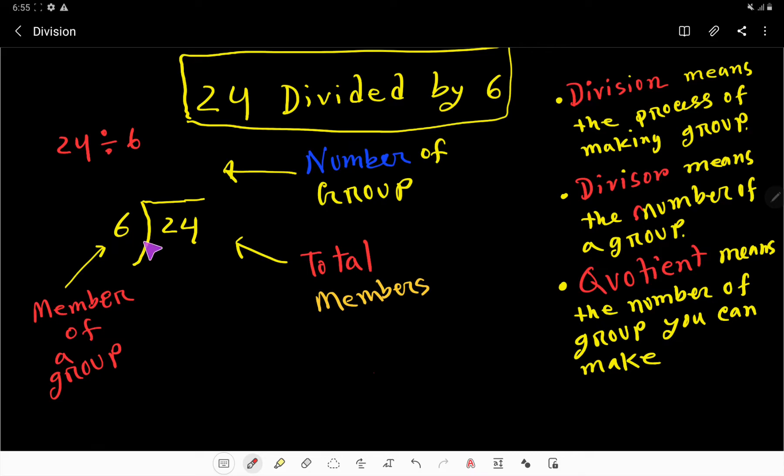And dividend means the total members. So dividend is 24 - total members. And here we write quotient. What do you mean by quotient? Quotient means the number of groups you can make and the member of each group will be 6.